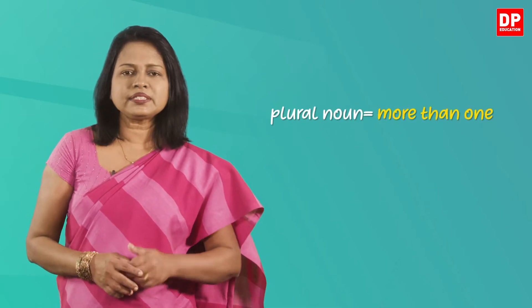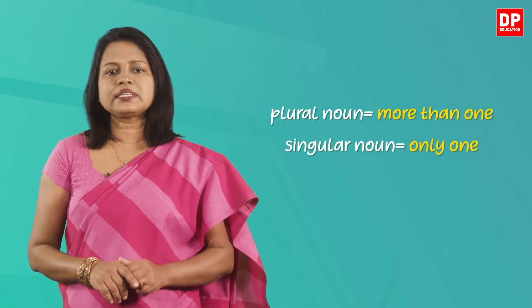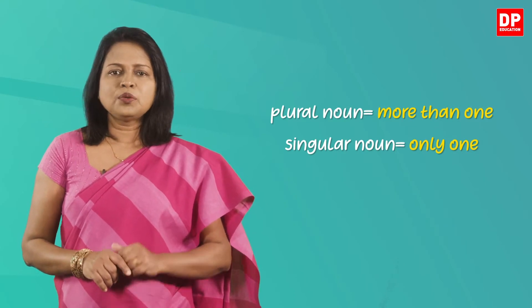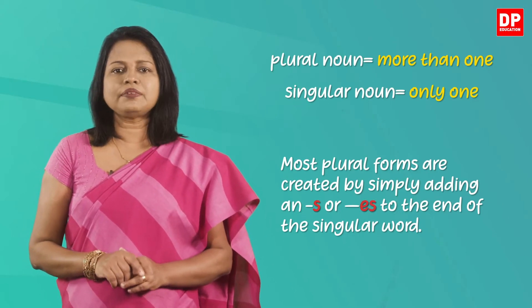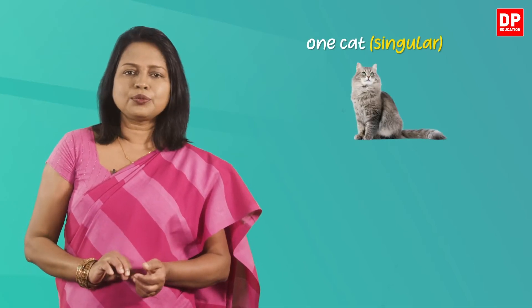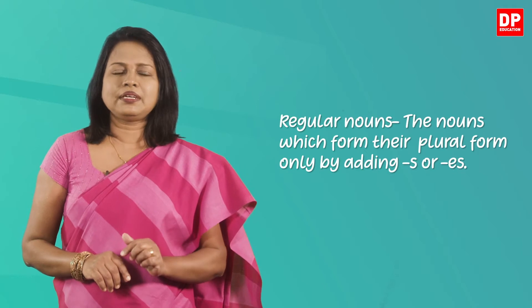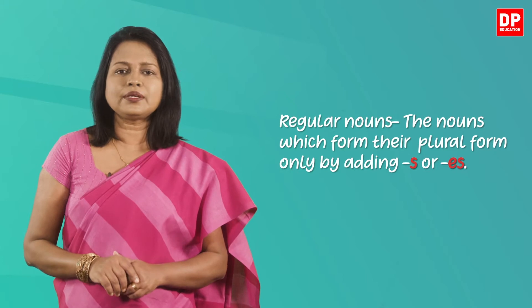Children, as you already know, a plural noun indicates that there is more than one of that noun, while a singular noun indicates that there is only one. When forming the plural of nouns, most are created by simply adding s or es to the end of the singular word. For example, we say one cat when it is singular, but two cats when it is plural. The nouns which form their plurals this way — that is, only by adding s or es — are called regular nouns.